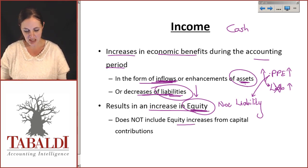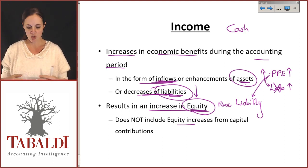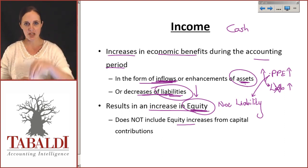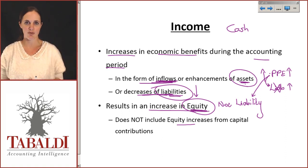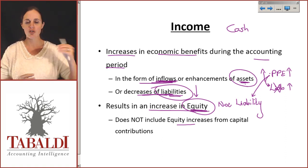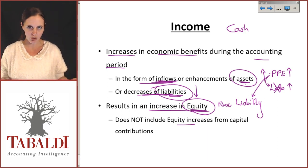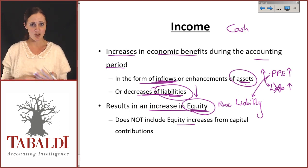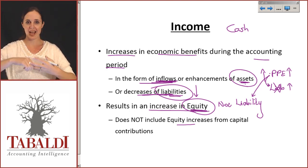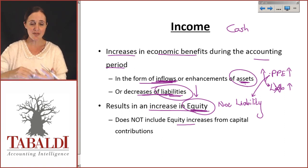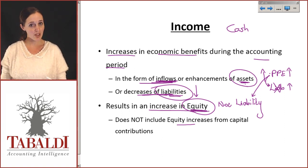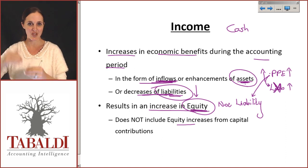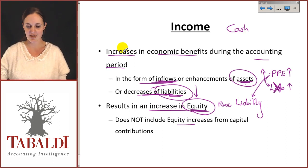This also doesn't include equity increases from capital contributions. Capital contributions or equity contributions is where the owners of the business invest more money into the company — that's not income, that's an investment from the owner. Income is not the owner continually putting money into the business. So basically, if you've increased assets through the year without creating any more liabilities, then the difference in your assets from the beginning to the end of the year must be income, as long as that increase hasn't touched your liabilities.